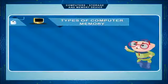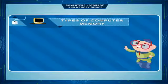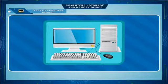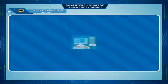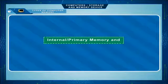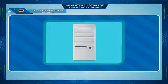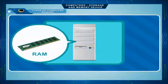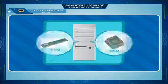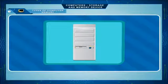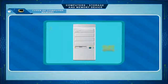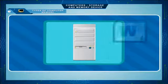There are two types of computer memory: internal or primary memory, and external or secondary memory. Primary memory is again of two types: RAM and ROM. Storage devices are the secondary memory that store a large amount of data and software permanently.